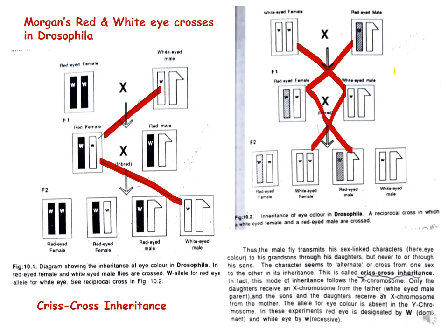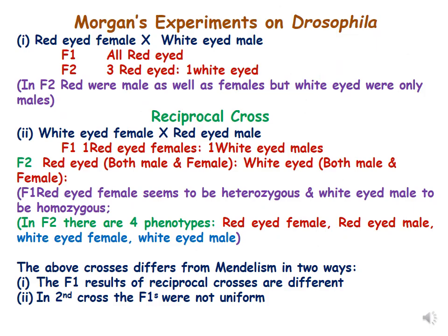This mode of inheritance follows the X chromosome — wherever the X chromosome goes, the eye color goes. Only daughters receive an X chromosome from the father, while sons receive their X chromosome from the mother. We have now understood Morgan's experiment through these two crosses.